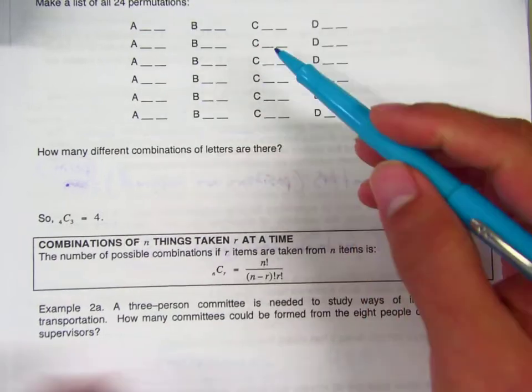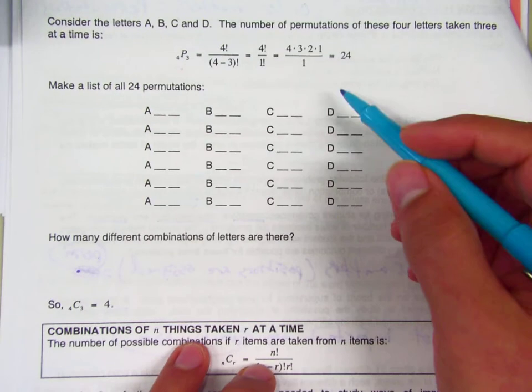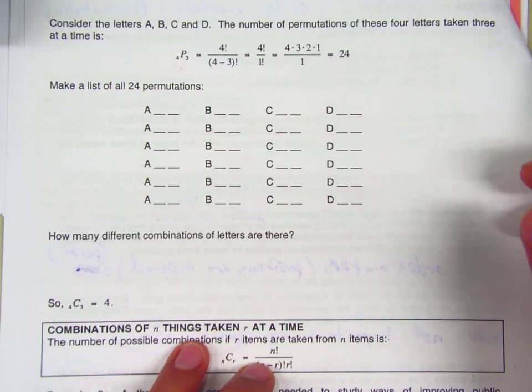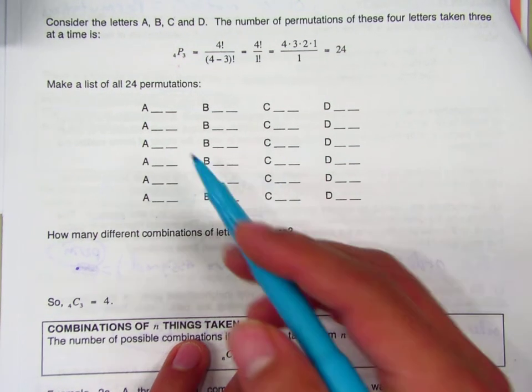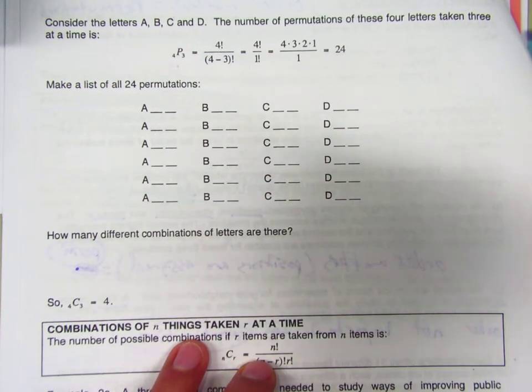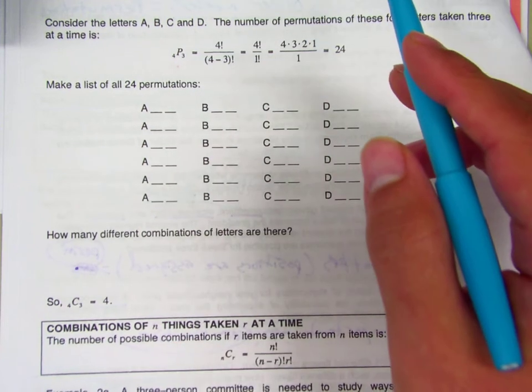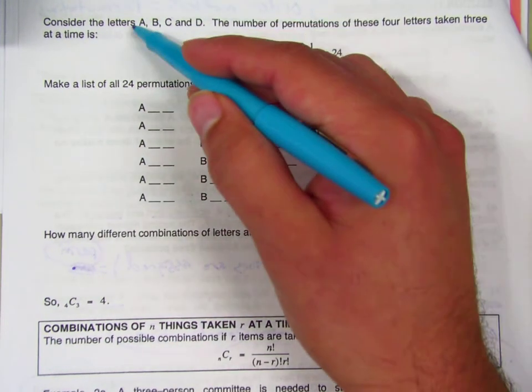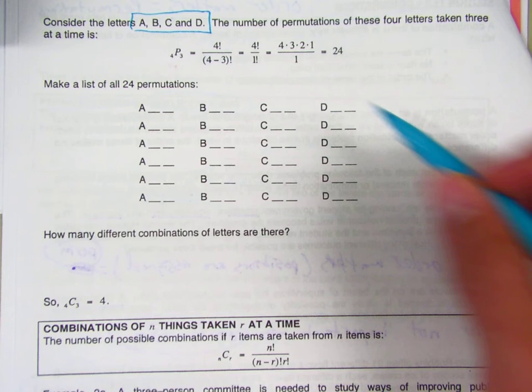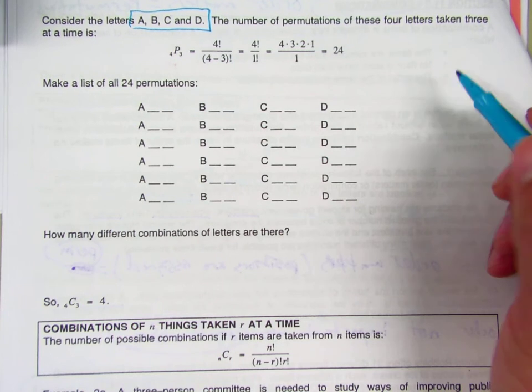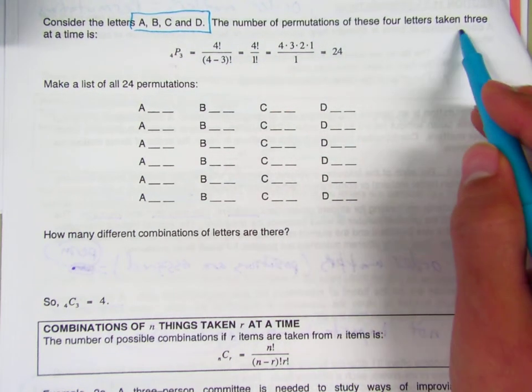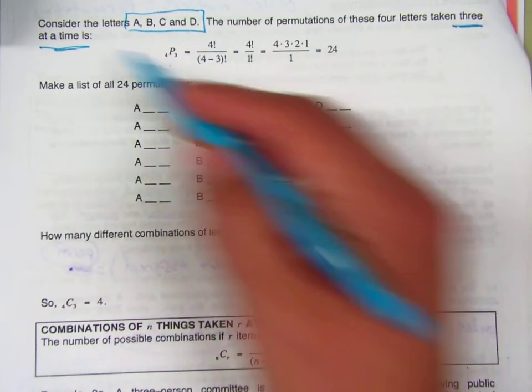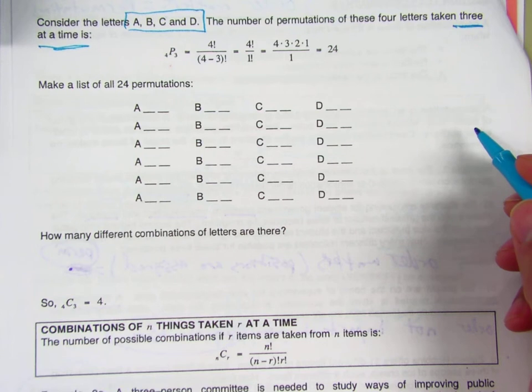Rather than do this, I want to actually give you more time in class to work. I still need to talk to some people, but here's what's going to happen. A, B, C, and D. And we are making permutations of these four letters taken three at a time.